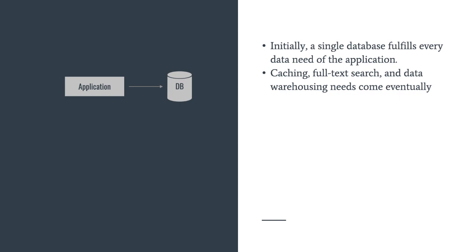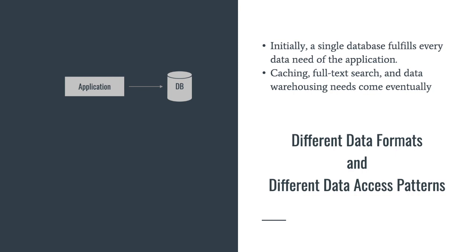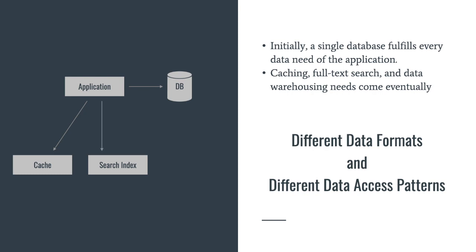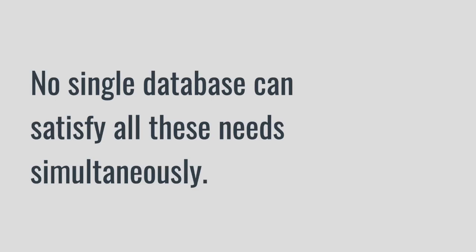But when your application evolves and gets more traction in the market, you need data systems that support different data formats and access patterns. For example, you're going to need a cache to speed up your reads, a search index to perform full-text search across your application, and a data warehouse in place for rich analytics. Practically speaking, no single database can satisfy all these needs simultaneously.